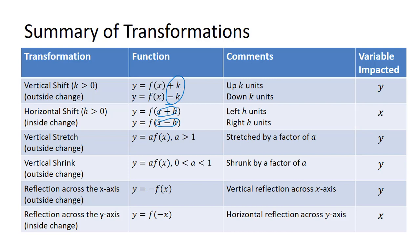We also learned about vertical stretches and vertical shrinks, defined by multiplying the function by a number greater than 1 to produce a stretch, or between 0 and 1 to produce a shrink. Lastly, we learned about reflections, which arise from taking either the opposite of the function or inputting the opposite of the x value. If the opposite is on the outside, we do a vertical reflection across the x-axis; if the opposite is on the inside, that produces a horizontal reflection across the y-axis.